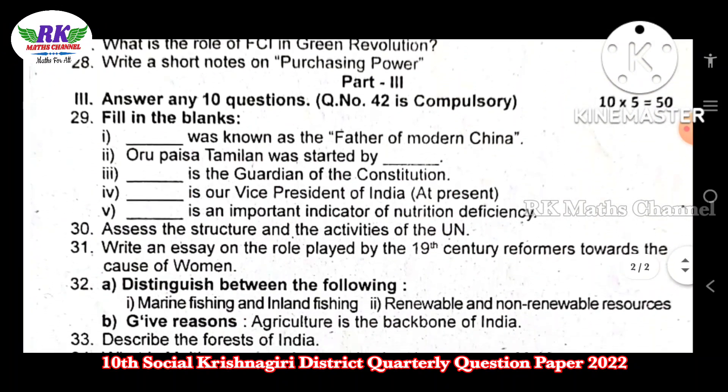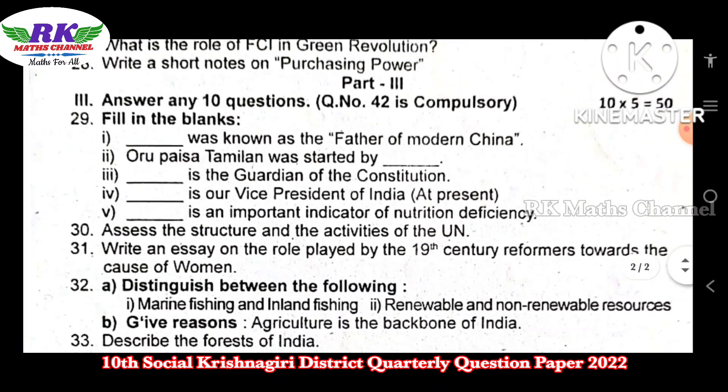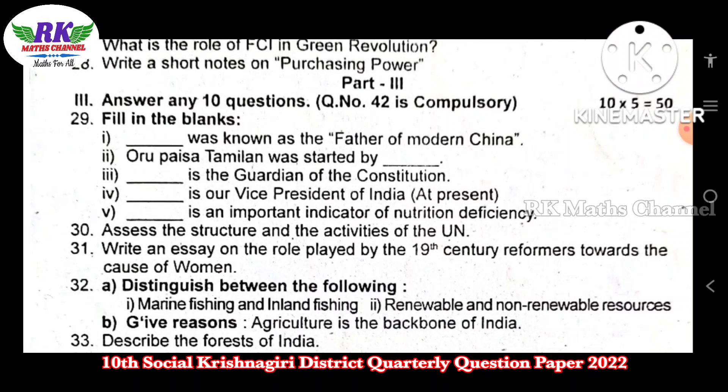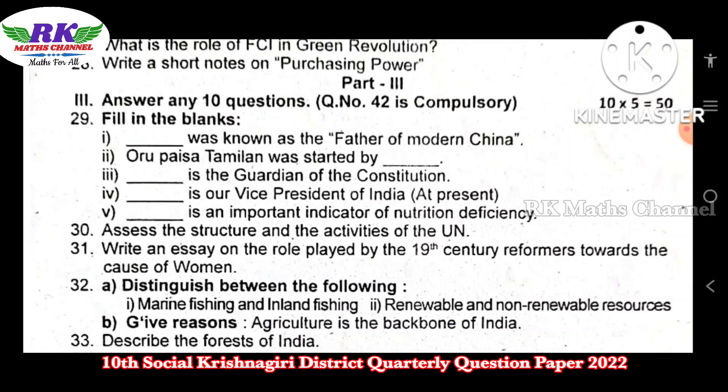Next, Part 3. Part 3 has 5 more questions, making it 10 questions. Question number 42 is a compulsory question.